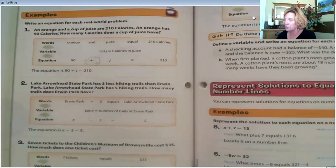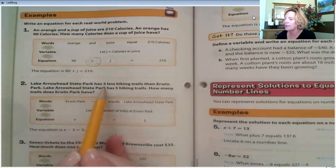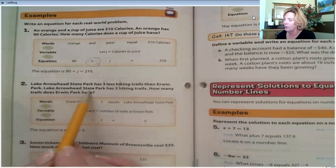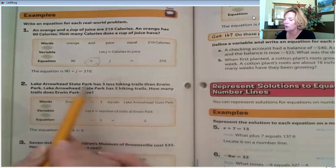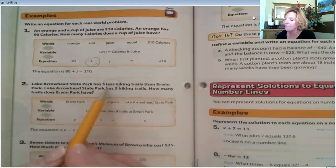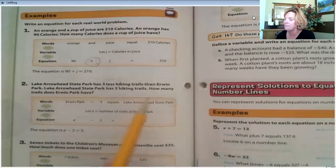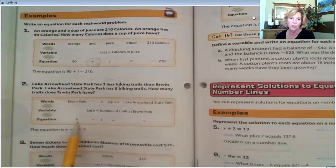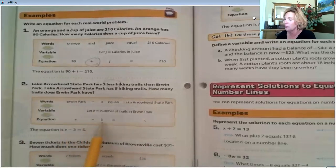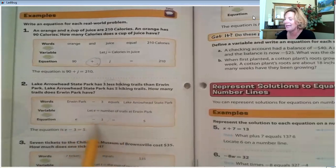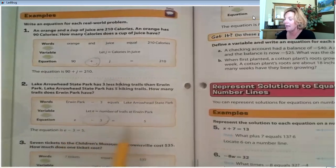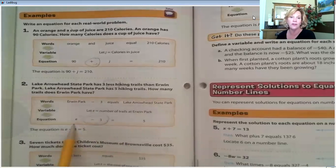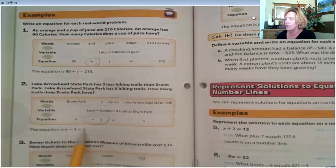Example number two, Lake Arrowhead State Park has three less hiking trails than Irwin Park. Lake Arrowhead State Park has five. So, Lake Arrowhead State Park has five. How many does Irwin have? So, we don't know how many trails Irwin has. But we do know that Lake Arrowhead has three less than Irwin and they have five. So, our equation is e, if we've chosen e as our variable, minus three equals five.